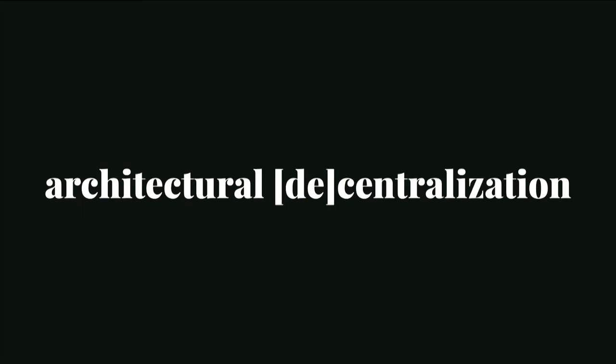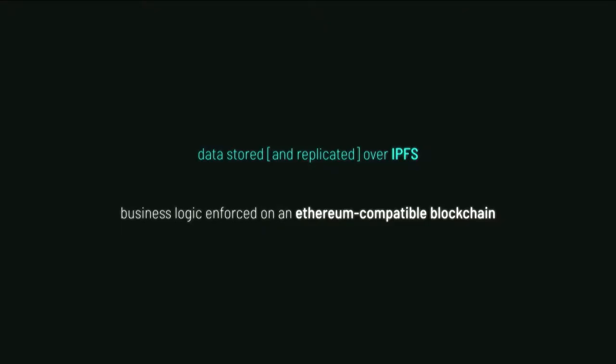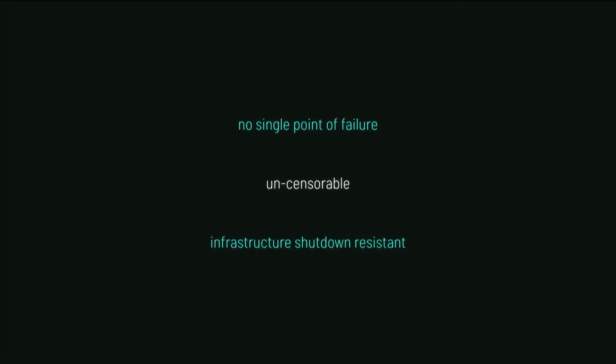When it comes to architectural decentralization, people always say Git is decentralized — and that's partially true. You can take any Git repo, clone it locally, and spawn your own server to offer it to the world. With Pando, we push things further by replicating data on the IPFS distributed file system and the logic on the Ethereum blockchain, to avoid the kind of infrastructure shutdown we're used to when GitHub goes down and everyone gets unemployed for the day.